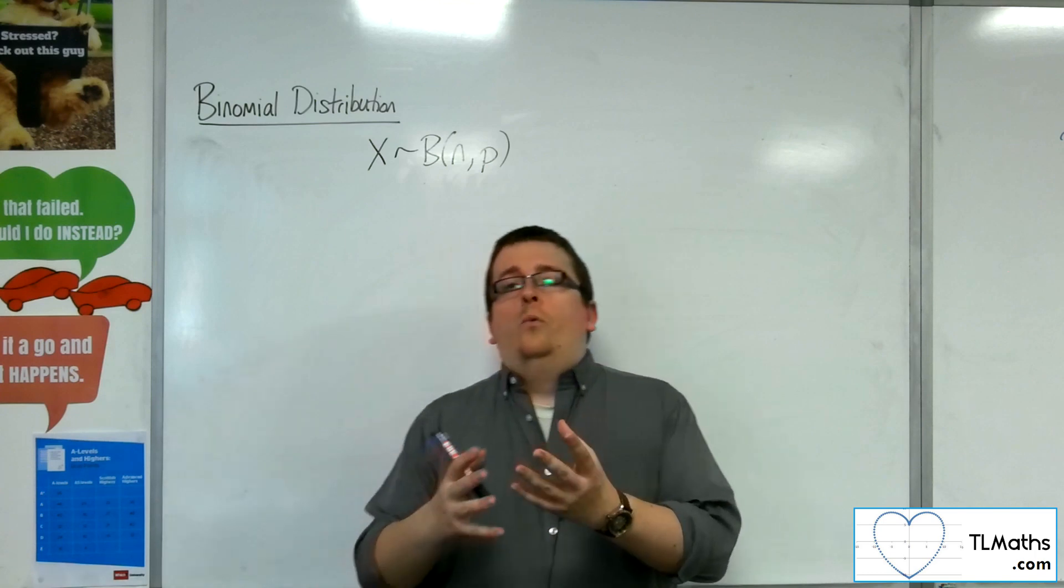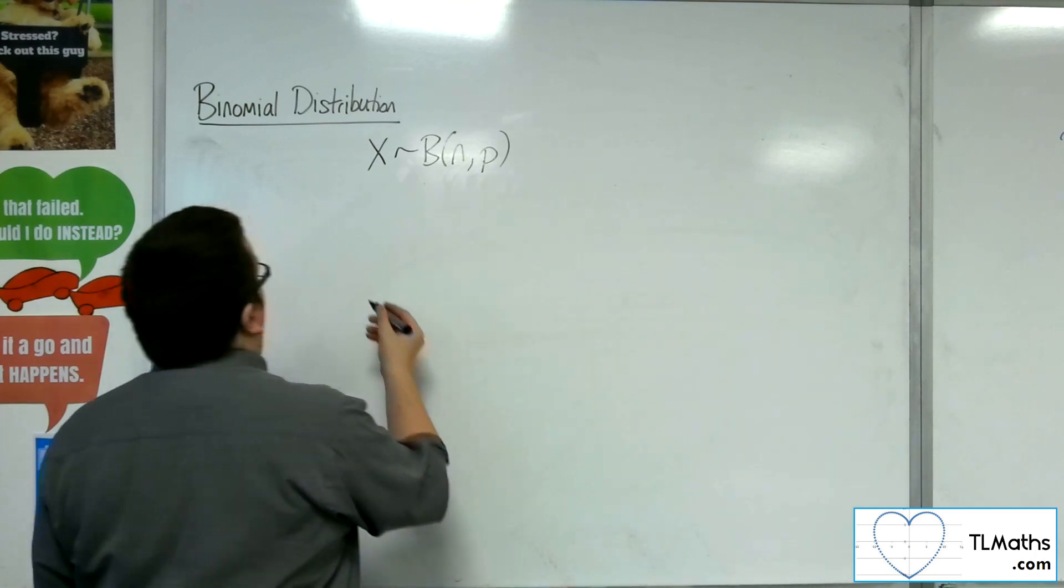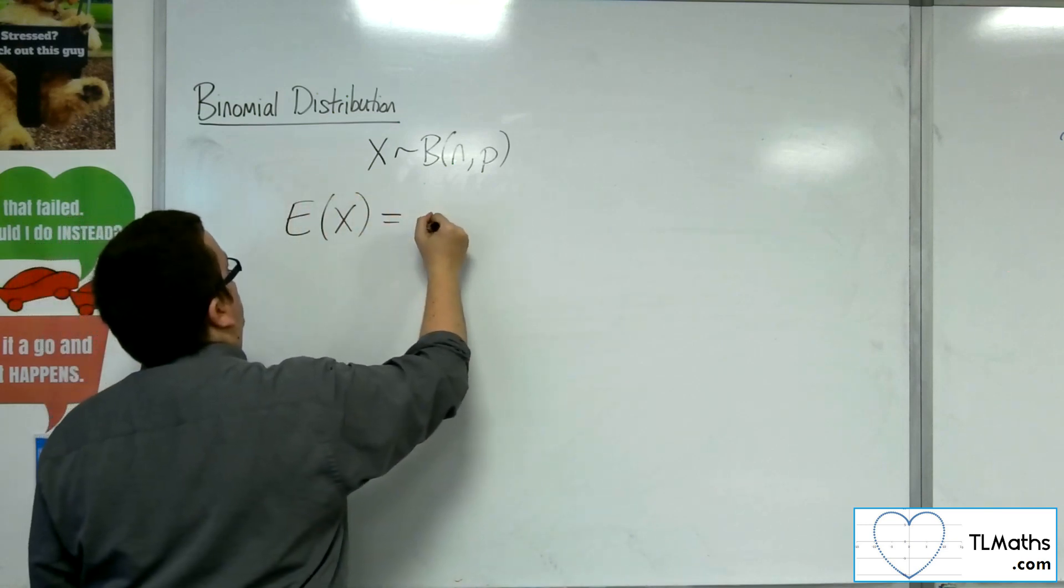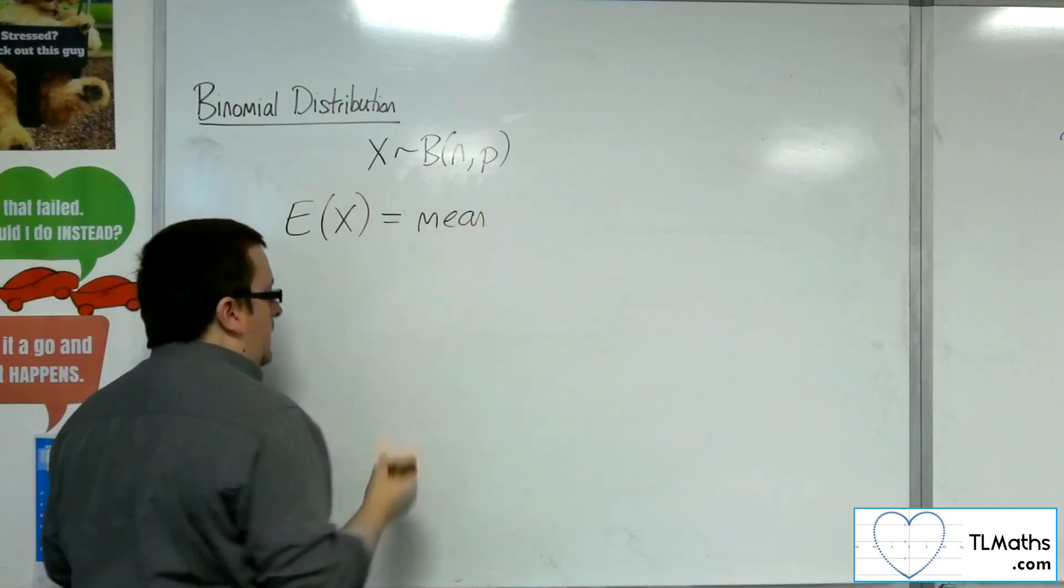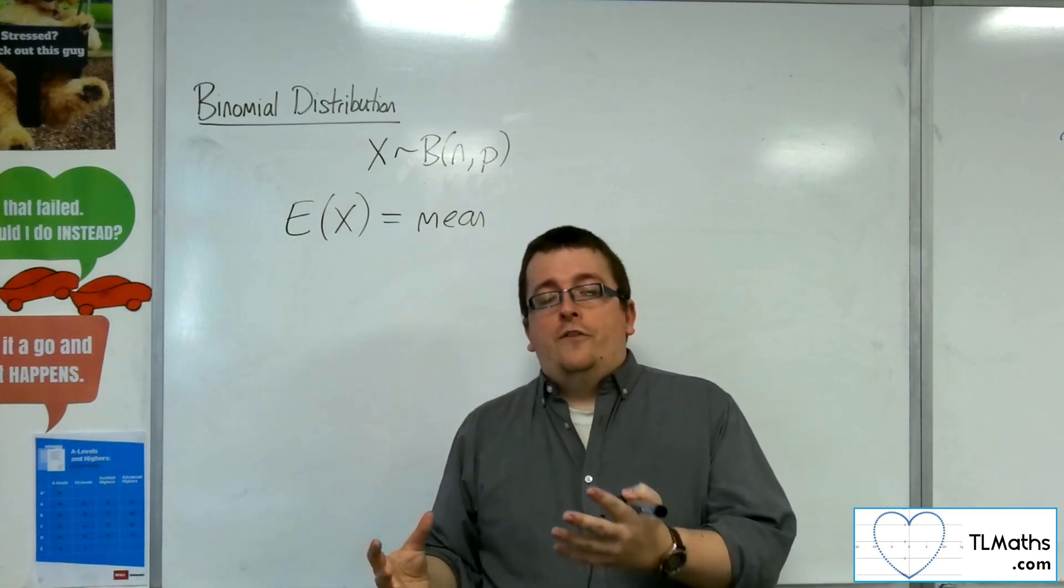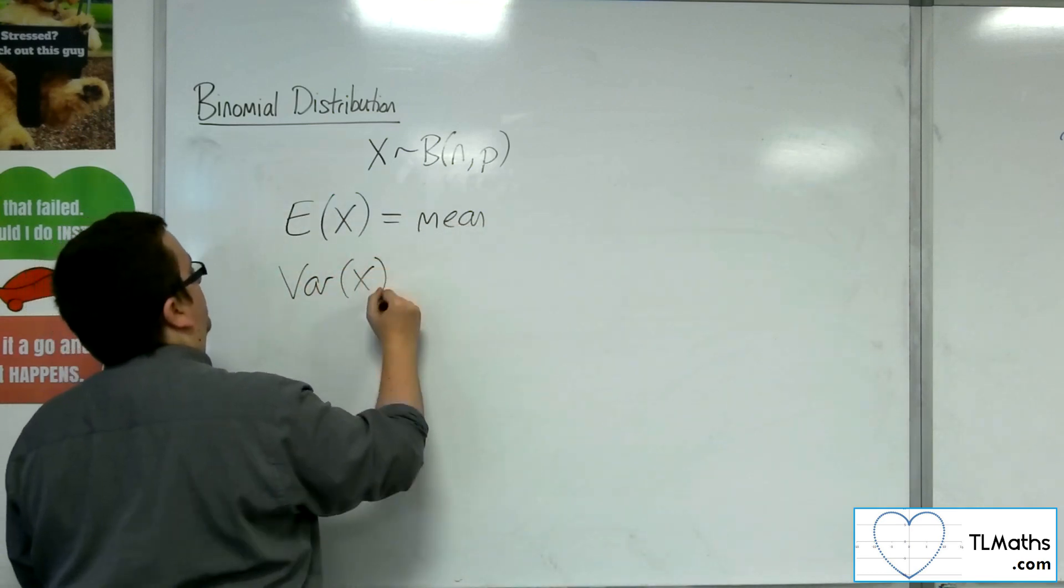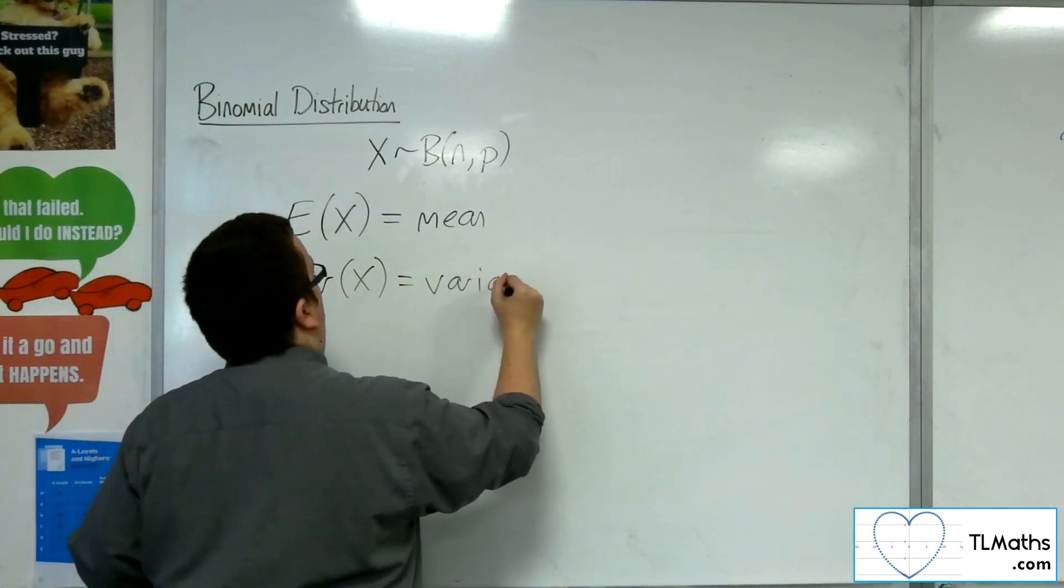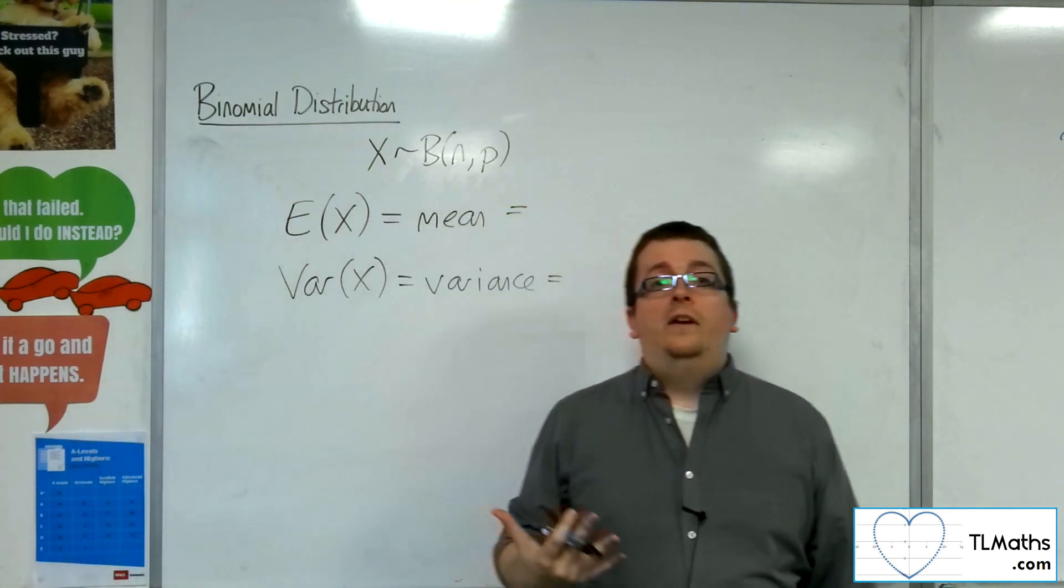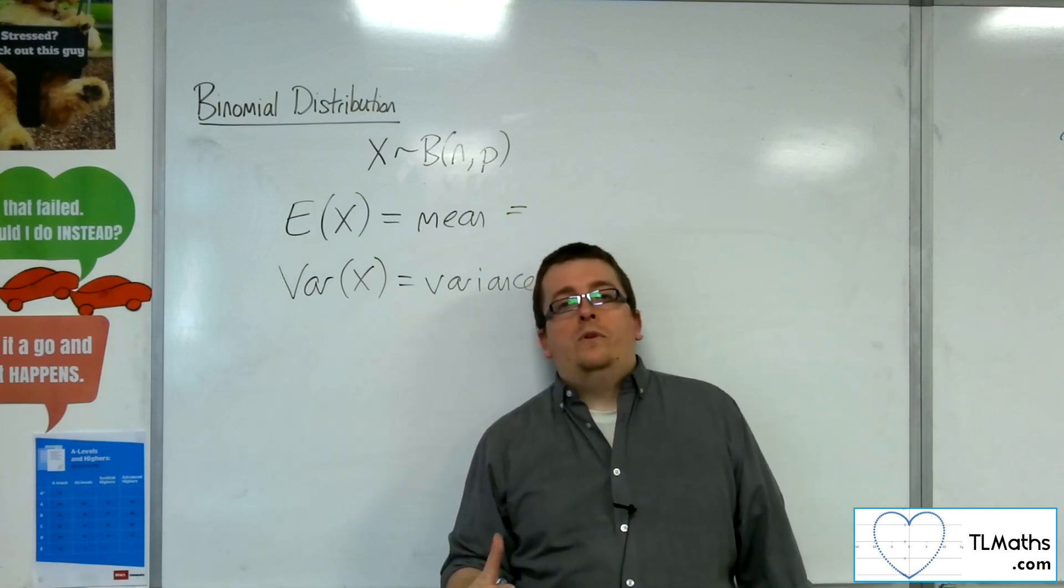The mean is referred to as the expected value, and we write it as E(x). The calculation of E(x) and Var(x) for the variance, these two calculations for discrete random variables is actually part of the further maths specification, so we don't deal with that here.